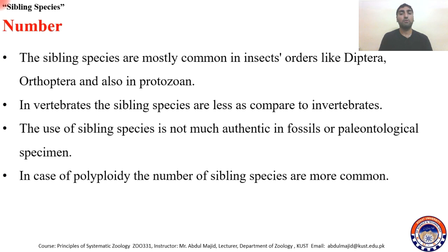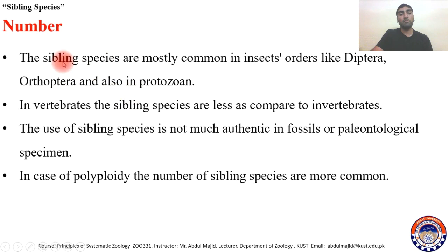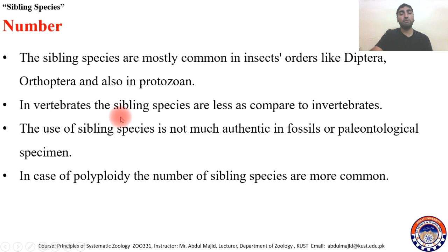Regarding the number of sibling species possible in different groups of animals: sibling species are mostly common in insects, like Diptera and Orthoptera, and also in huge numbers in Protozoa. Sibling species are mostly common in insects because animals in this class make up about 75% of the animal kingdom, so there are many adaptations to different zones, giving rise to a large number of sibling species. In vertebrates, sibling species are less common compared to invertebrates.